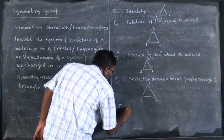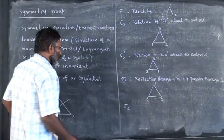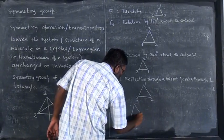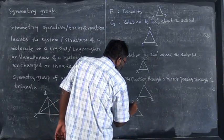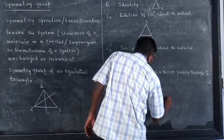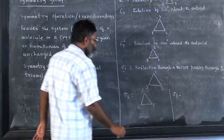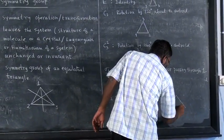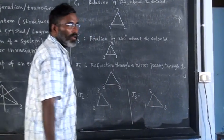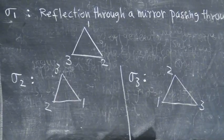Then I will define σ2 as the mirror passing through 2. What I will get? 2 will not change, but 3 will come here and 1 will come here. And σ3 is the reflection through a mirror passing through 3. That means we will have 3 will not change, 2 will come here and 1 will come here. These are all the symmetry operations that will leave a piece of this equilateral triangle invariant.